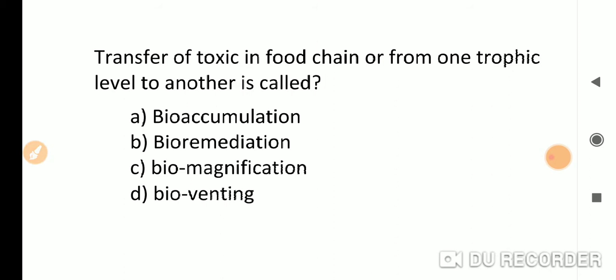From one trophic level to another is known as bio-magnification. Bio-accumulation is when chemicals accumulate within one organism. When transfer happens from one trophic level to another trophic level, we call it bio-magnification.